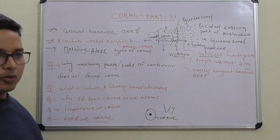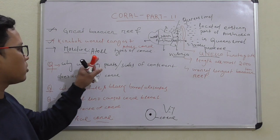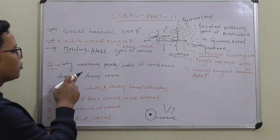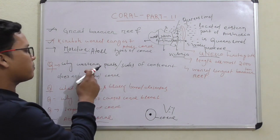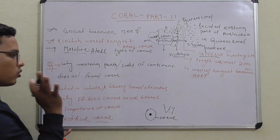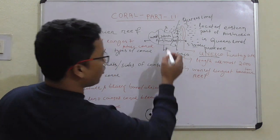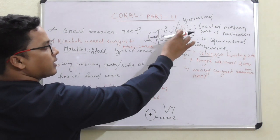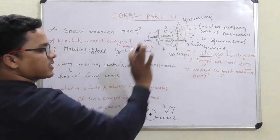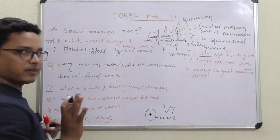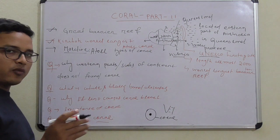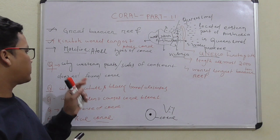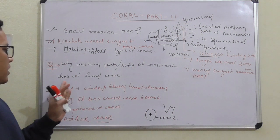Now, Maldives — they might ask you which type of corals Maldives has. Maldives also has atoll type of corals. Next factual question: why does the western part or side of a continent not have corals? For example, the eastern part of Australia has corals, but the western part does not. Similarly, the western side of the African continent does not have corals.